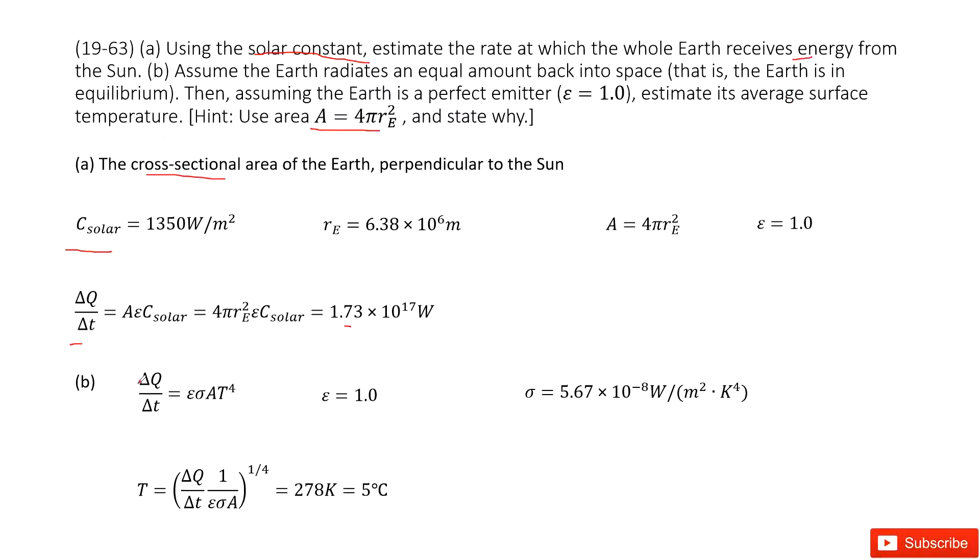So this one is the Boltzmann equation, the Stefan-Boltzmann equation. It tells you the rate of energy loss. This one is equal to ε σ A T⁴. So you can see this part is given from the first part. This is the rate of energy flow.